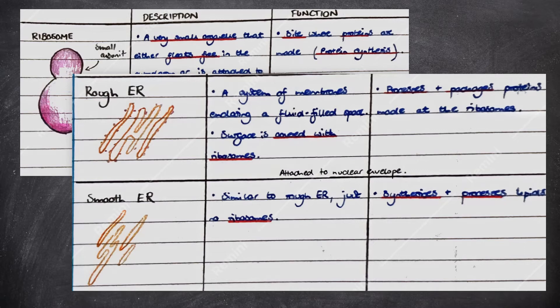Then we have the smooth endoplasmic reticulum, which has a similar structure to the rough endoplasmic reticulum but no ribosomes. The smooth endoplasmic reticulum synthesises and processes lipids.